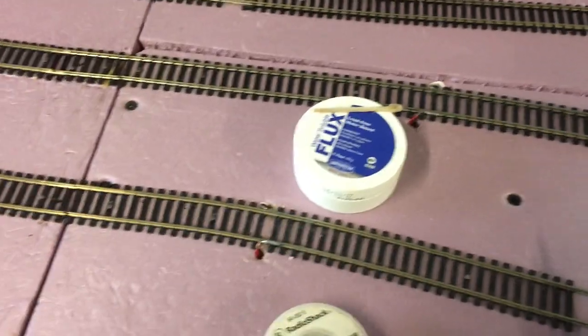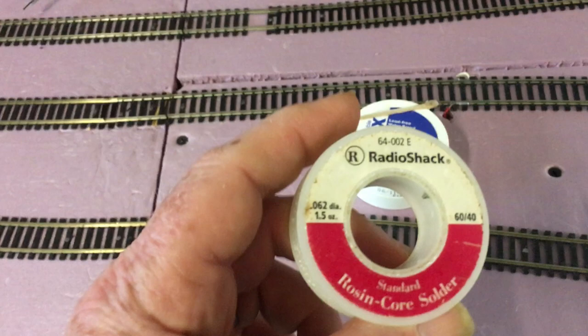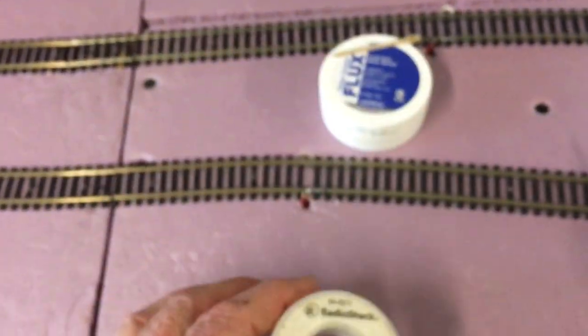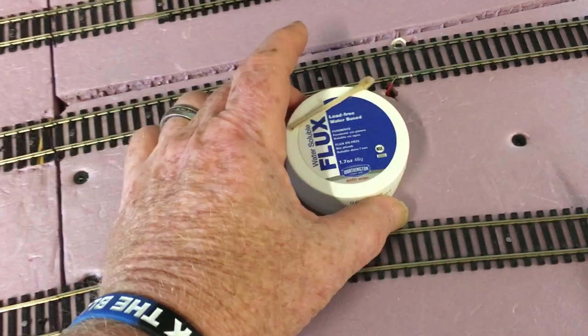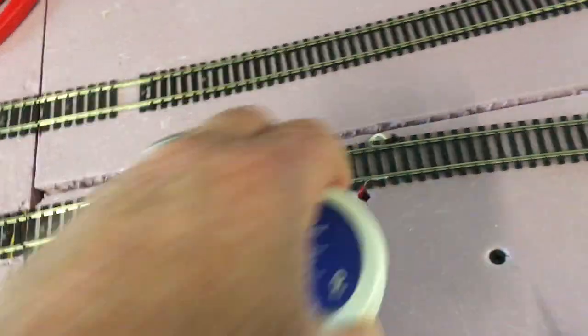The next thing you need is solder. I use a 60-40 blend rosin core. It doesn't matter who makes it or where you buy it from. The next thing I use is flux, a paste flux that looks like this.